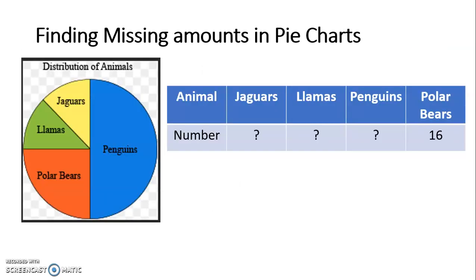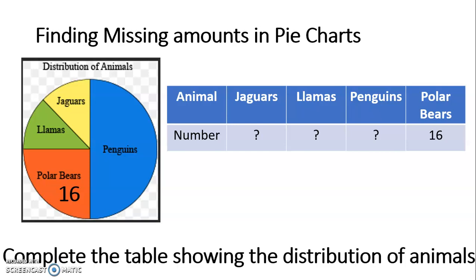Let's have a look at this first calculation or this first word problem. Right, so as you see there, we've got a distribution of animals. We know one of the amounts, but we don't know all of the amounts. The question is: complete this table showing the distribution of animals.